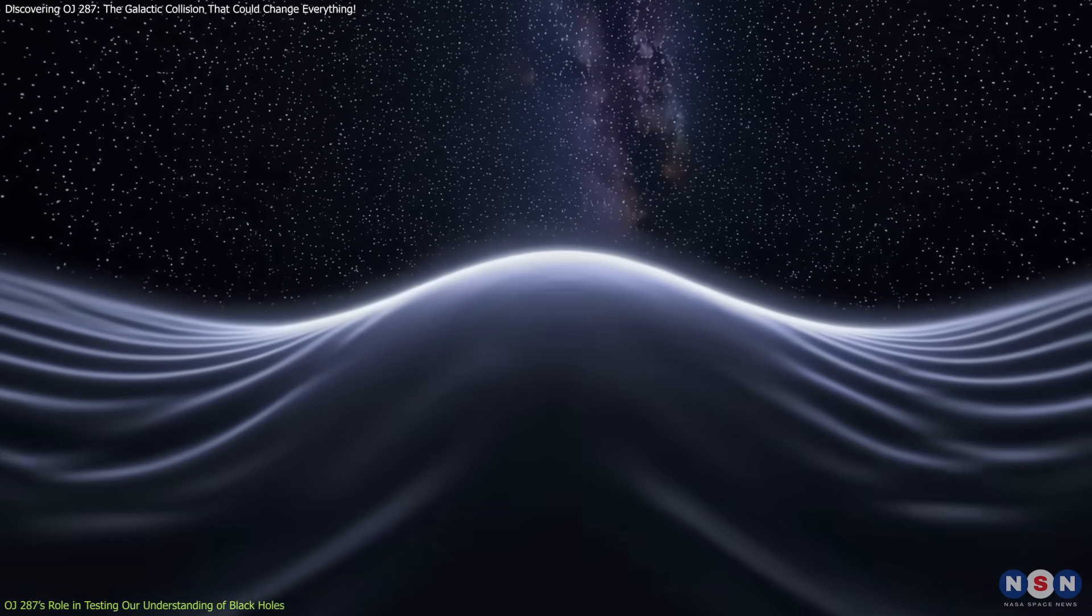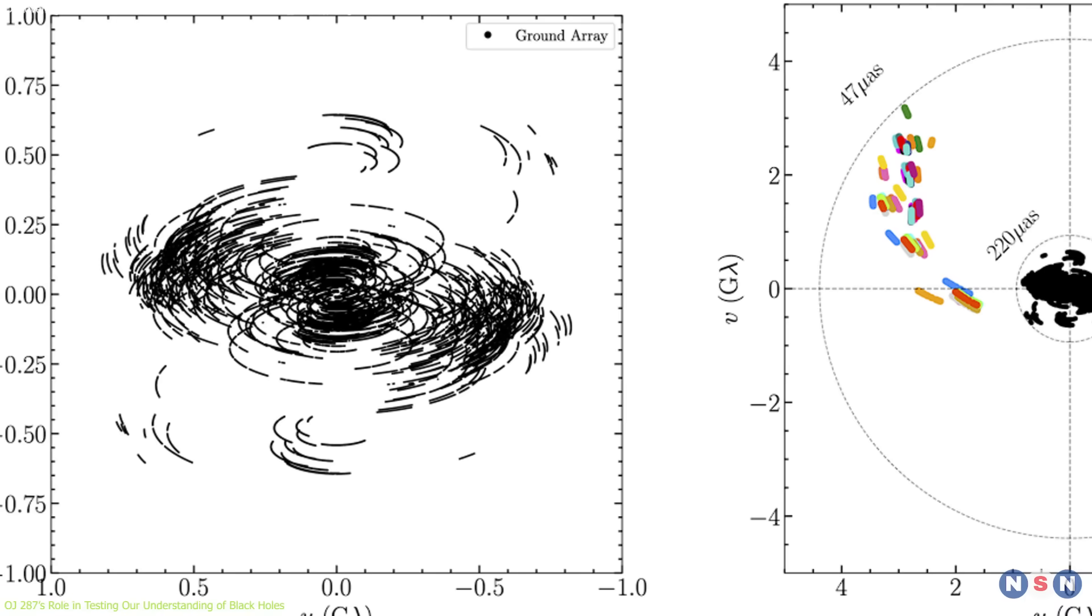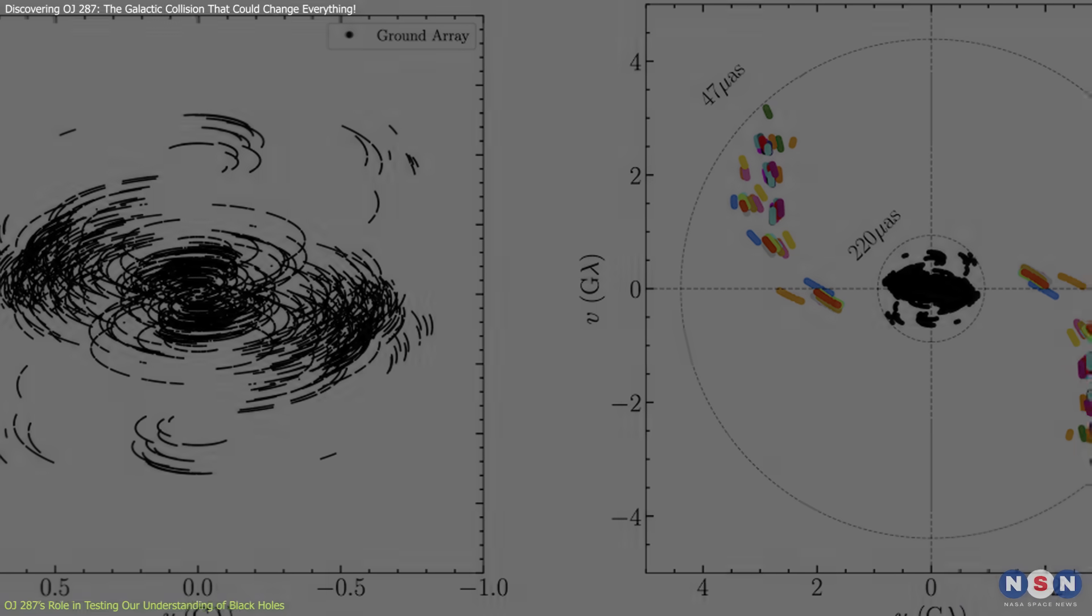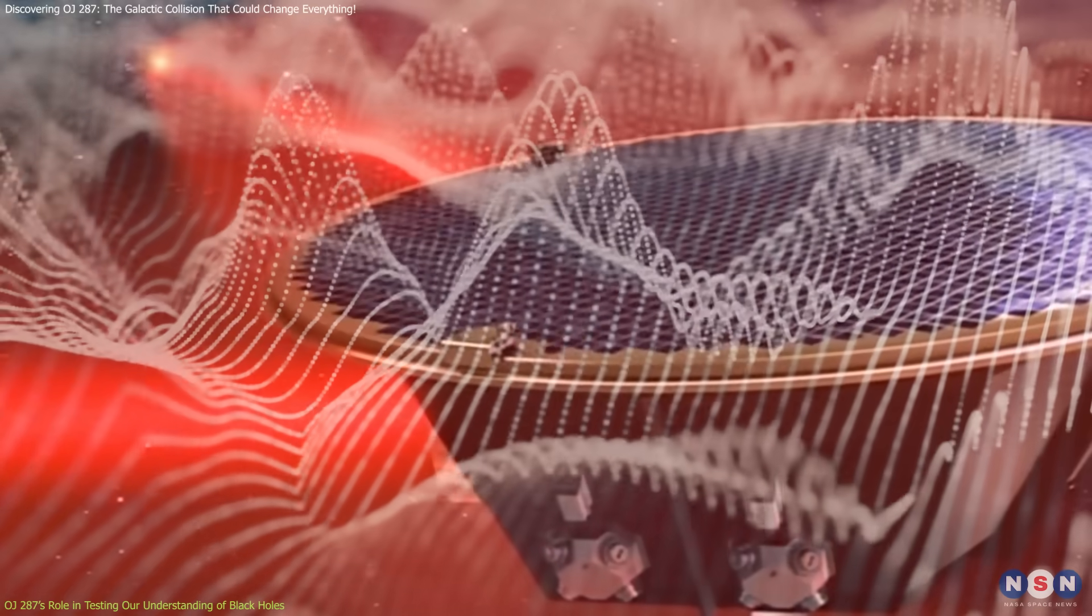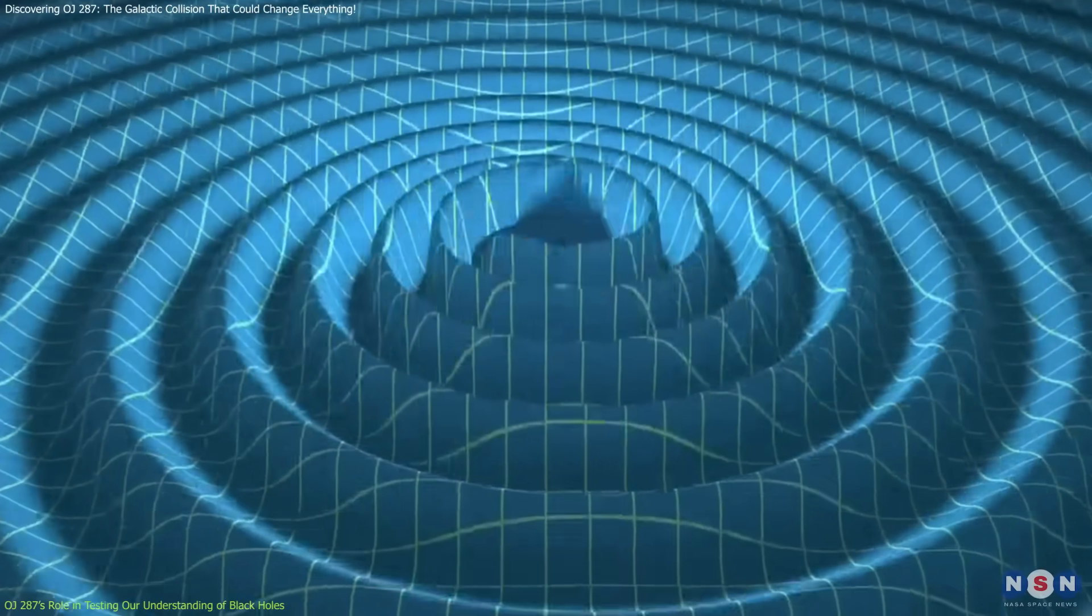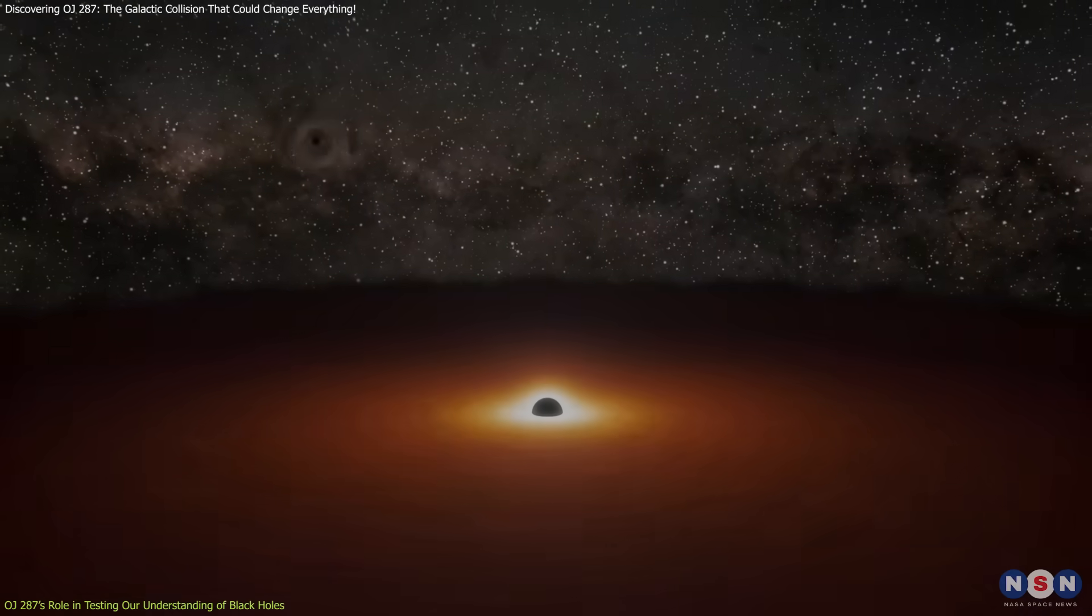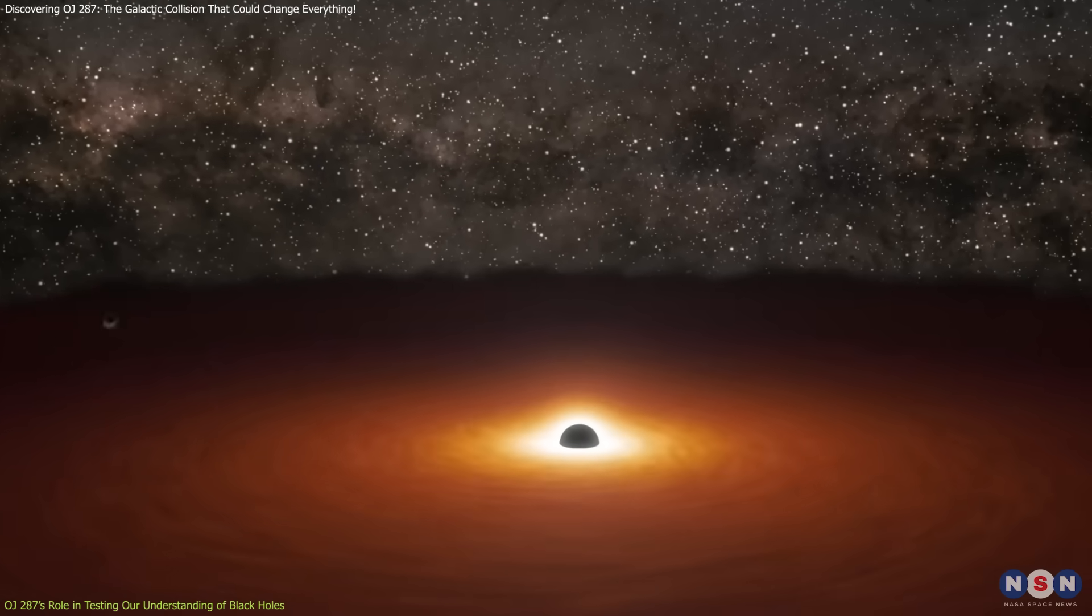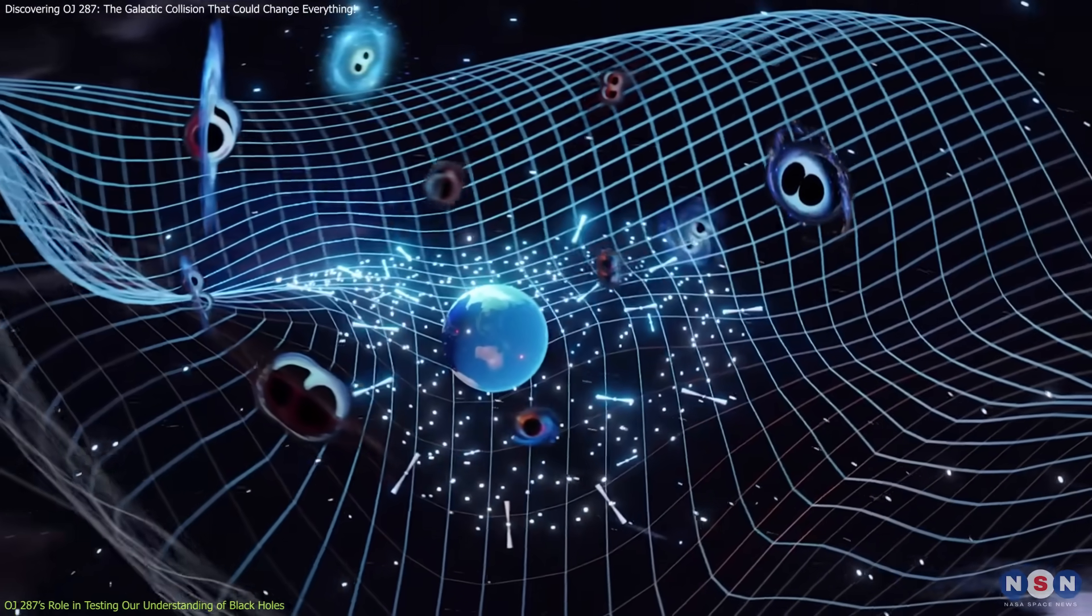OJ 287's role in the study of gravitational waves is particularly exciting as it provides a bridge between the electromagnetic observations of black holes and the gravitational wave signals that will soon be detectable. The eventual merger of these two black holes will be one of the most significant events in astrophysics, and studying this system in detail will help scientists develop new methods for detecting and analyzing gravitational waves from other mergers in the future.